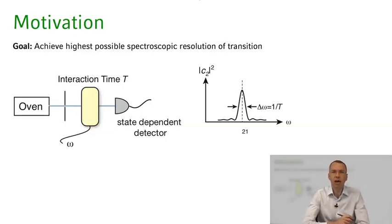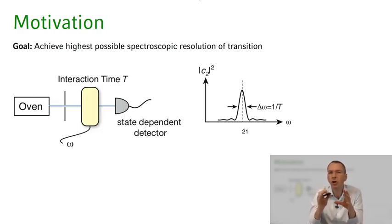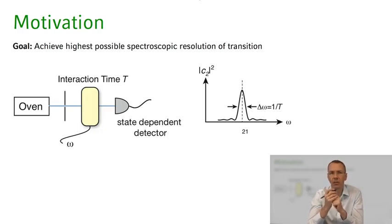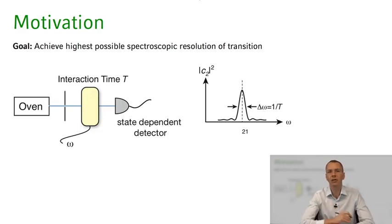One of the motivations of Norman Ramsey and his colleagues at the time was to do the highest possible precision spectroscopy of transitions in an atom — to determine the transition frequency omega_21 of two energy levels to the highest possible accuracy. By time-energy uncertainty, in order to do that with high precision, we have to have a long interaction time of the light field with the atoms, which ultimately determines the linewidth to which we can determine the transition frequency.